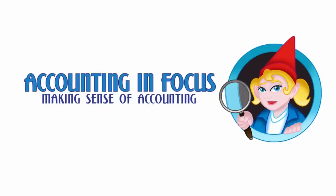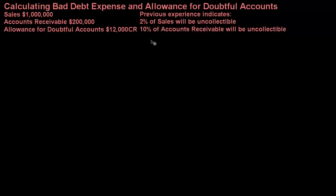Welcome to Accounting in Focus. In this video we're going to discuss two methods for calculating bad debt expense and allowance for doubtful accounts. In the intro to bad debt expense video we talked about the journal entries you would use to record bad debt and allowance for doubtful accounts. I hope that before you watch this video you'll watch that one, because I think this video makes a lot more sense once you get the background information about bad debt expense.